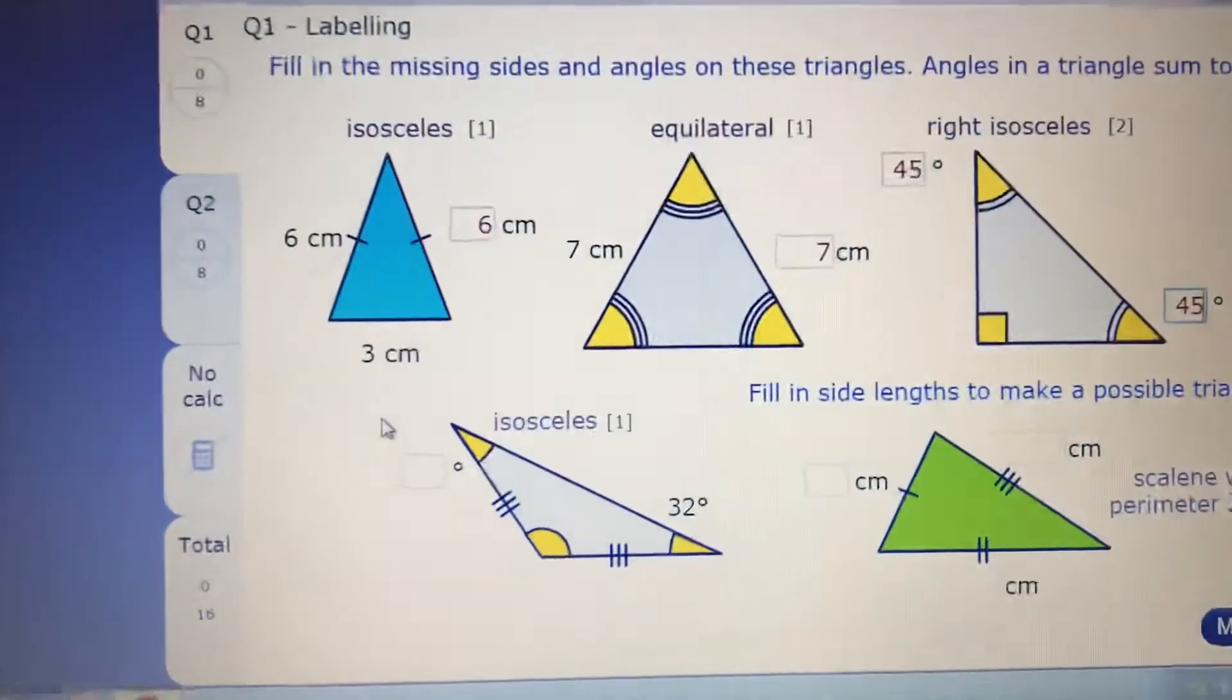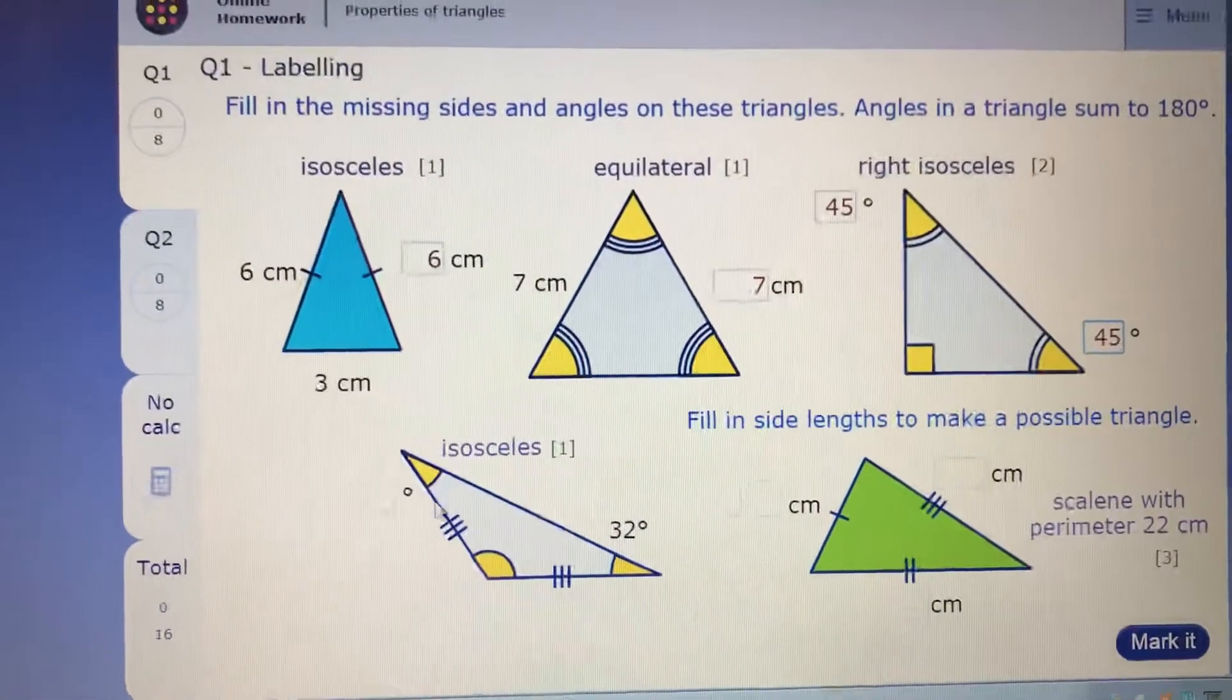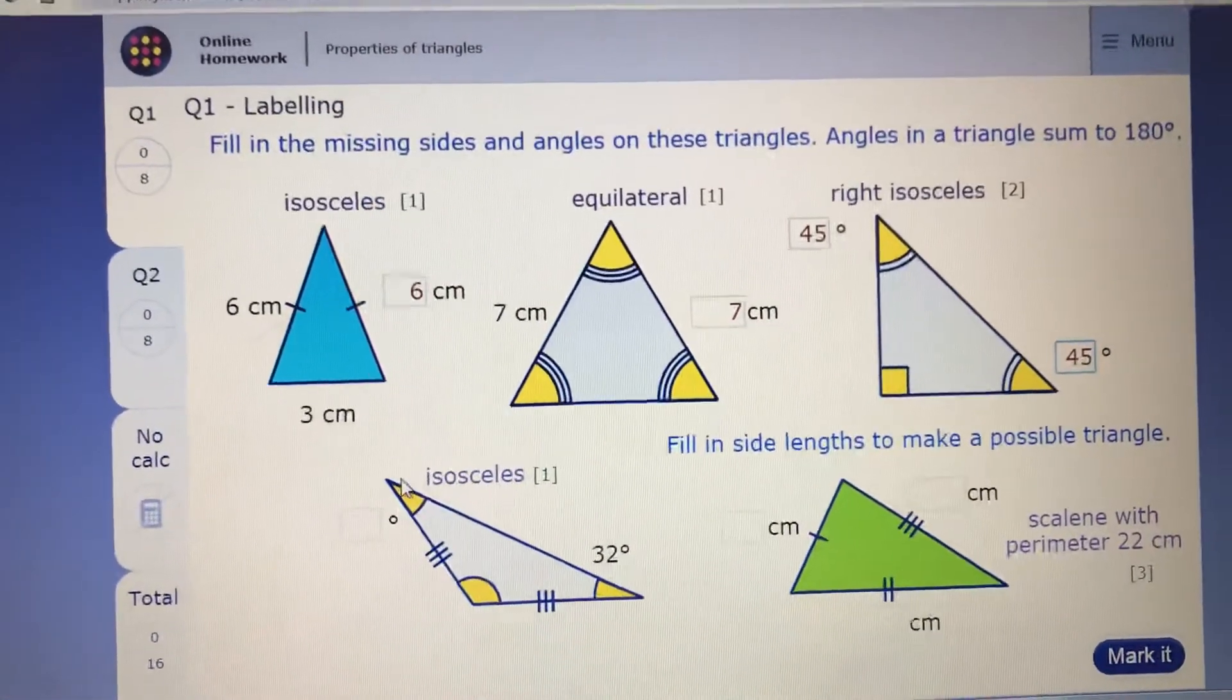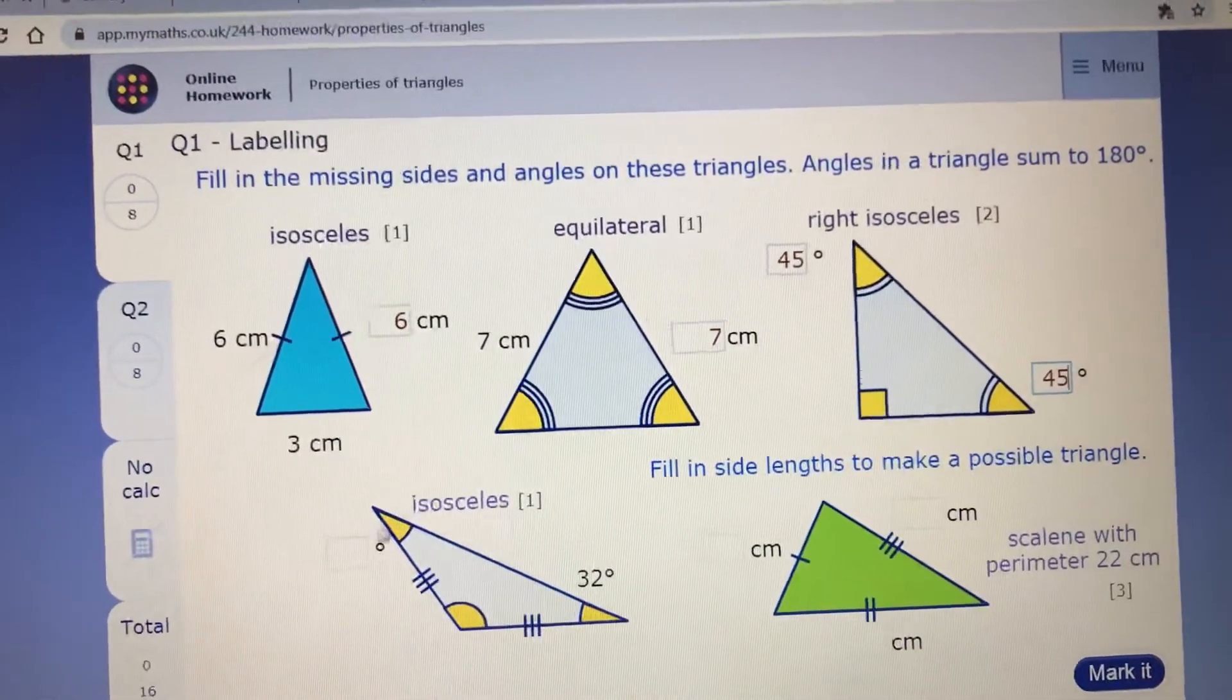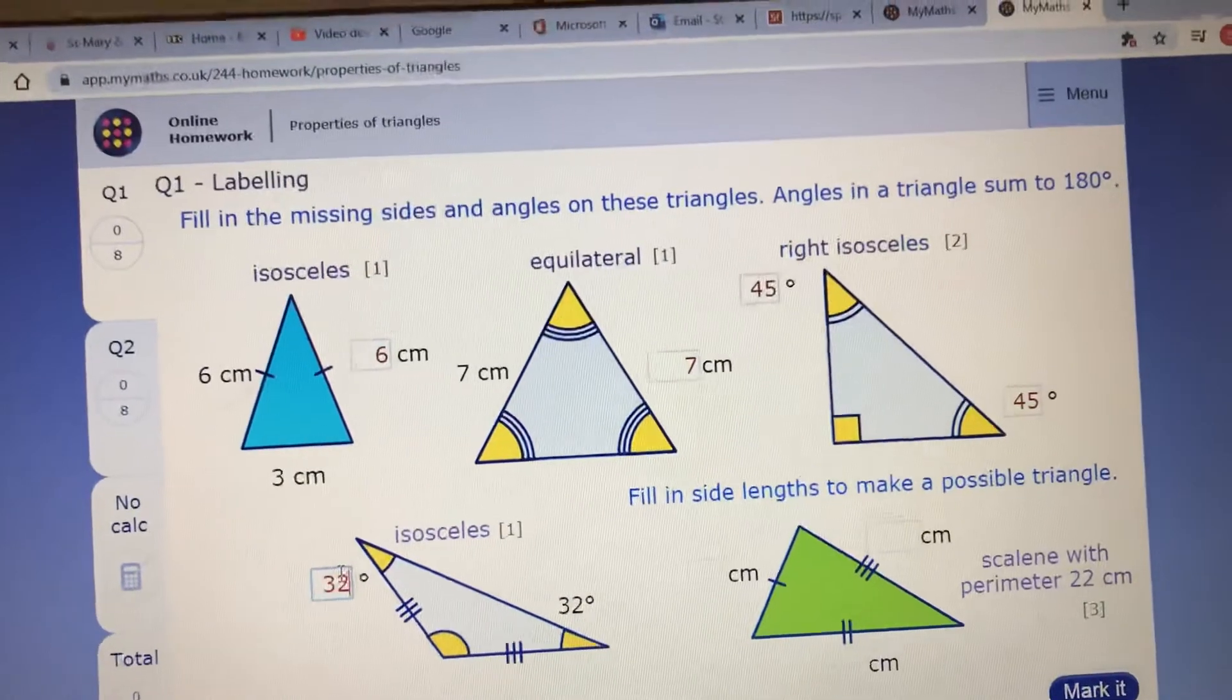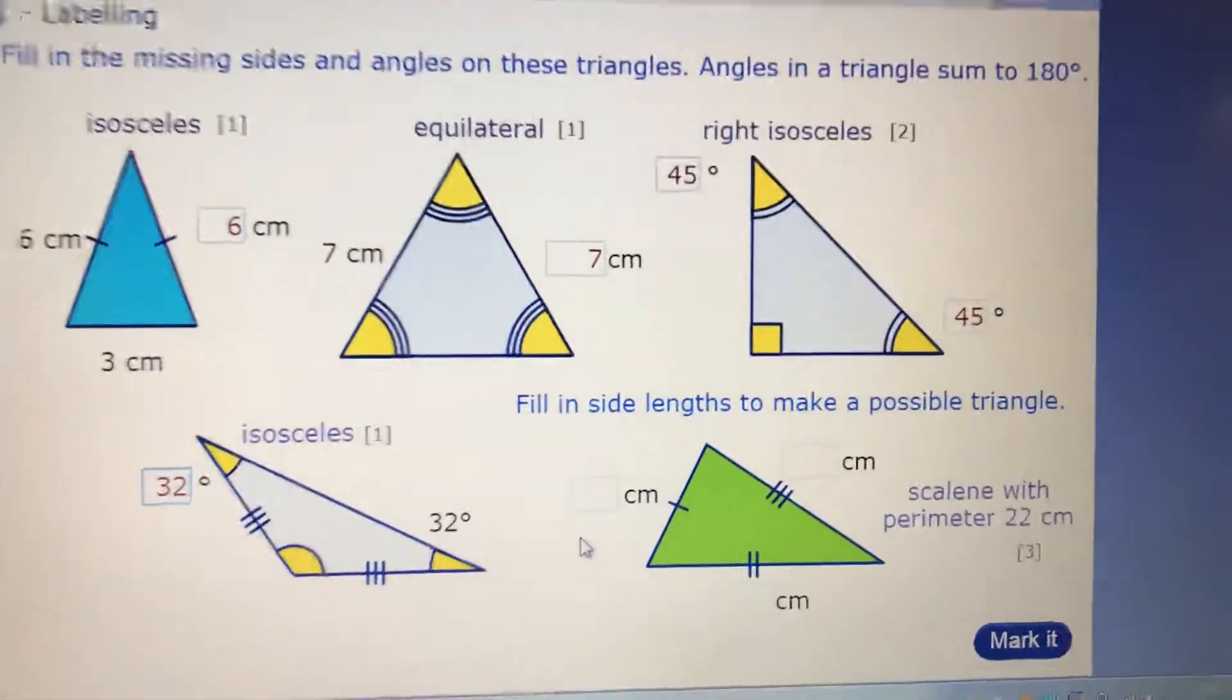Down here, isosceles. This shows me that these angles and the line here are the same. So you can see where they've come off to join to make the same here. So if this is 32, his friend up here is 32 as well because I know it's an isosceles. And that would make this one a different angle.